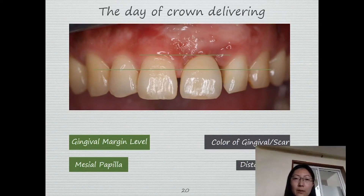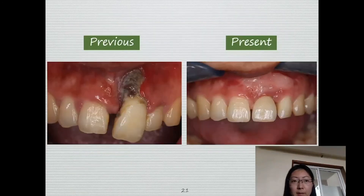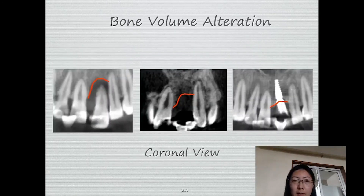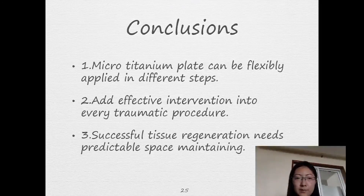Now let's look at the pros and cons of this outcome. We achieved a good gingival margin level and the mesial papilla. Unfortunately, due to the free gingival graft, there is an incompatible color of the gingiva at the facial part. The distal papilla is ideal. Comparing previous and present CBCT analysis, we can see the bone volume alteration. We can conclude that the micro titanium plate can be flexibly applied in different steps, we can add effective intervention into every traumatic procedure, and successful tissue regeneration needs predictable space maintenance.